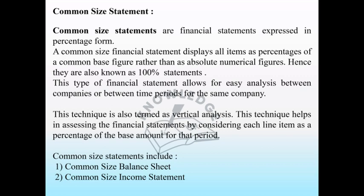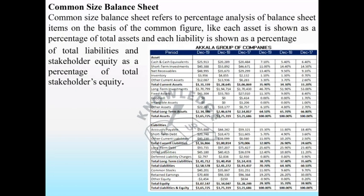Common size statements include the common size balance sheet and the common size income statement. The common size balance sheet refers to the percentage analysis of balance sheet items. Each asset is shown as a percentage of total assets, and each liability is shown as a percentage of total liabilities, and stockholders' equity is shown as a percentage of total stockholders' equity.